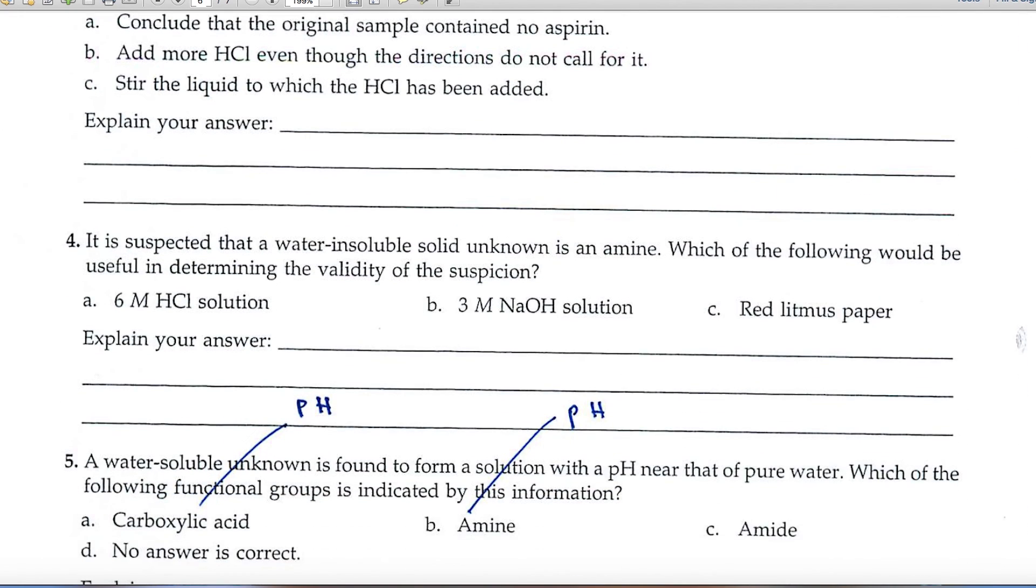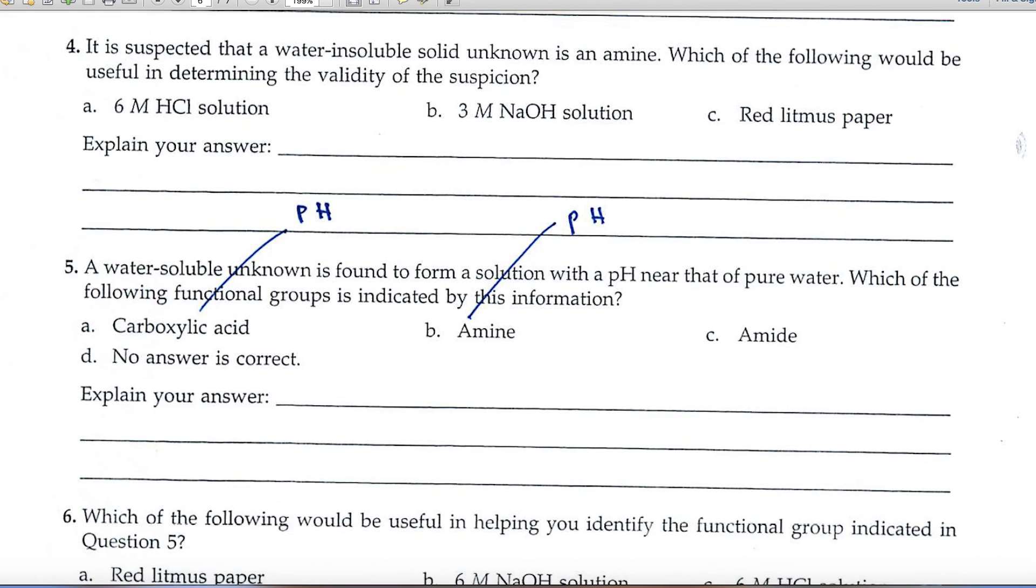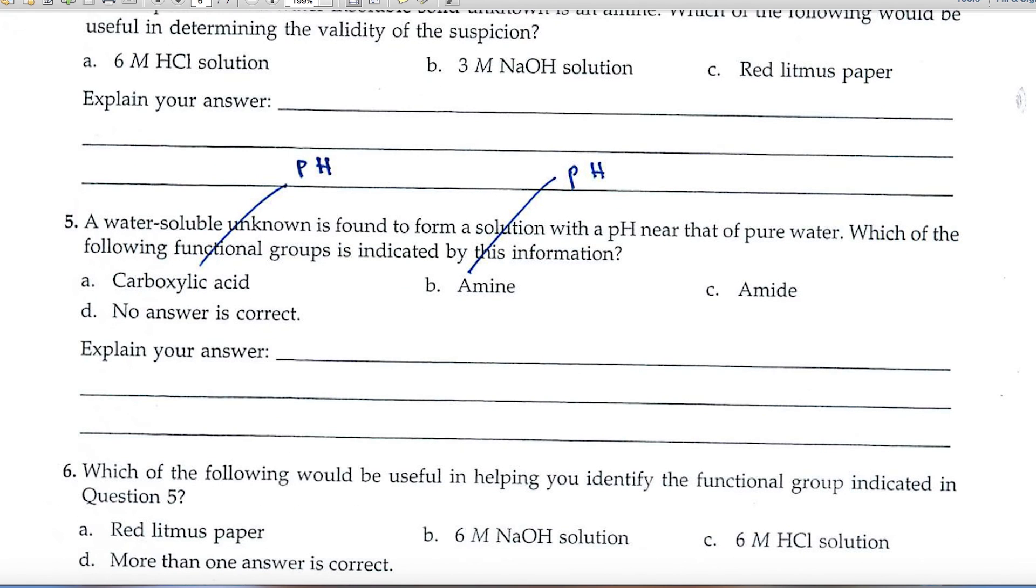Three and four are pretty straightforward. Number five says that we have an unknown that has a pH near that of pure water. Well, remember what kind of pH carboxylic acids give, and what kind of pH values are associated with the amines. That'll help you.